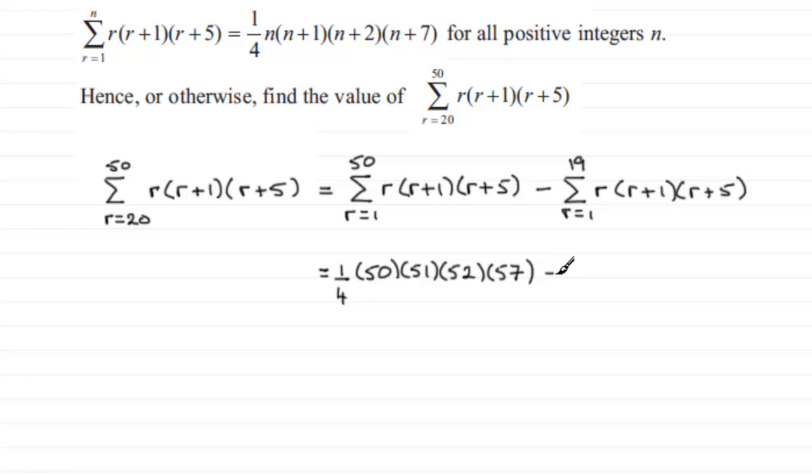And from this we subtract this summation, which is the result we get when n is 19. So we're just going to substitute 19 for n in here. It's going to be minus a quarter multiplied by n, which is 19, then n plus 1, so that's 20, n plus 2, so that's 21, and then n plus 7, so that's 26. Work this out and you will find you will get 1,837,680.